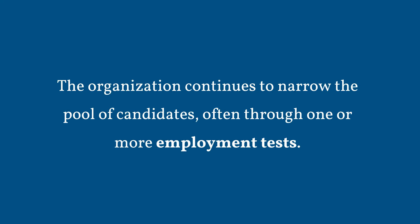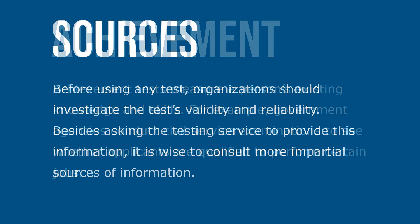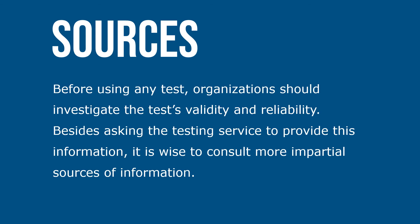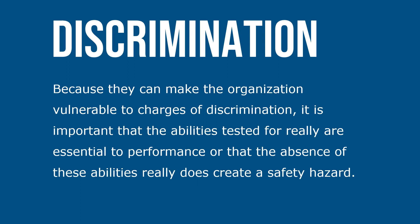The organization continues to narrow the pool of candidates, often through one or more employment tests. Achievement tests measure a person's existing knowledge and skills. Before using any tests, organizations should investigate the test's validity and reliability, and it's wise to consult impartial sources of information. When physical abilities are essential to job performance or avoidance of injury, the organization may use physical ability tests. Because they can make the organization vulnerable to charges of discrimination, it's important that abilities tests are really for essential performance functions, or that the absence of these abilities really does create a safety hazard.